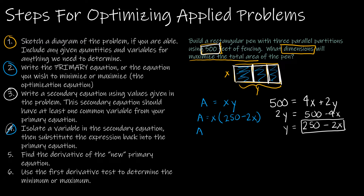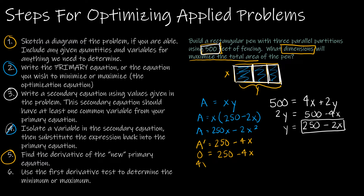Simplifying: area equals 250x − 2x². Now I find the derivative: A′ = 250 − 4x. Setting it equal to zero: 250 − 4x = 0, add 4x, divide by 4, giving x = 62.5. That is my critical value.